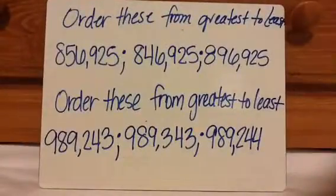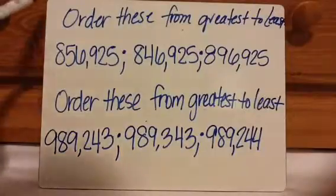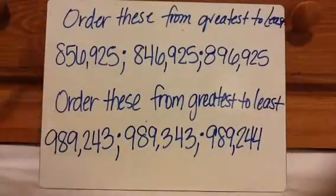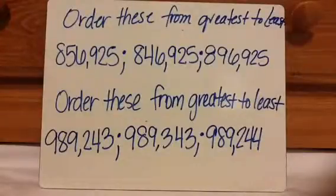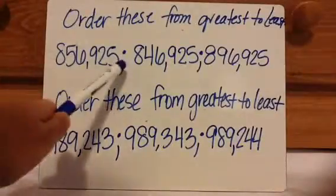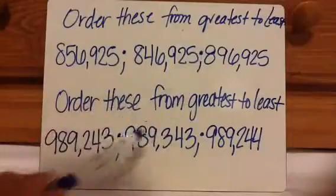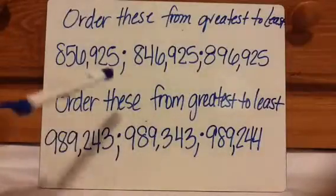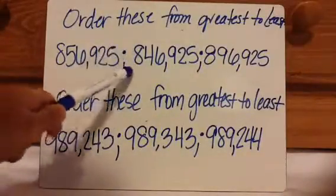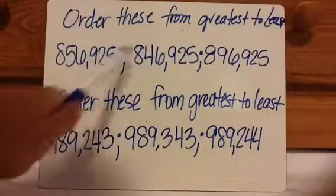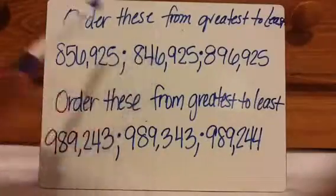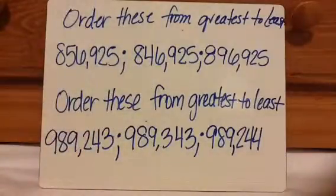Here are two practice questions that I want you to do. This one they want from greatest to least, and this one also greatest to least. Please make sure when you list it, you start from the ones place. These are semicolons, which means they're separating numbers, so these are two completely separate numbers — they're not part of each other. Press pause, work the problems, press play when you're ready to check.